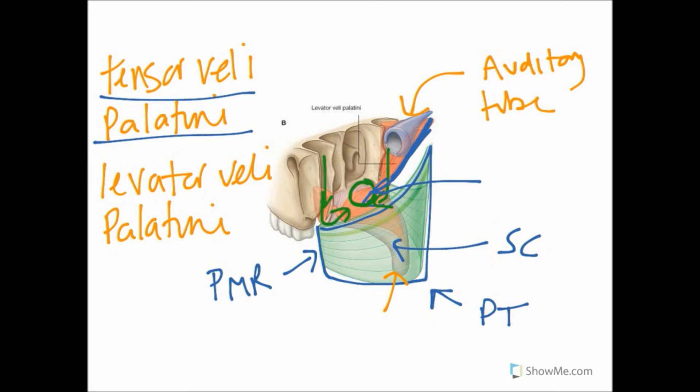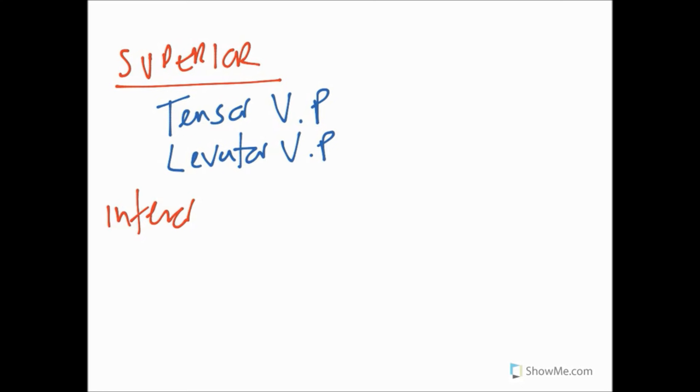Okay, before we go, I'm just going to write out all the names of these muscles and we'll go through their innervation. We have our superior group, which we just talked about: tensor veli palatini and levator veli palatini. We can also mention the three that are inferior to the soft palate, below the soft palate: the muscular uvulae...